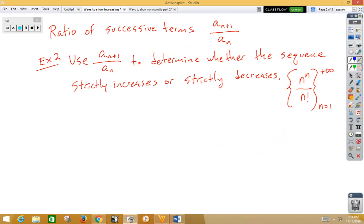Let's learn a second method. The ratio of successive terms is a sub n plus 1 divided by a sub n.